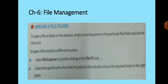Now we move on to opening a file or folder. To open a file or folder on the desktop, simply move the pointer to the file or folder and double-click on it. You can also right-click on it and select the Open option. To open a file stored at a different location, go to File Explorer by double-clicking on the 'This PC' icon, select the specific drive from the left pane, then double-click on the required folder in the right pane and find your file to open it.